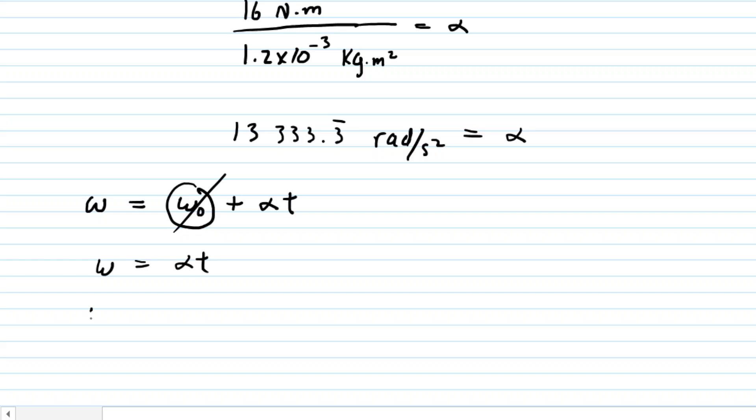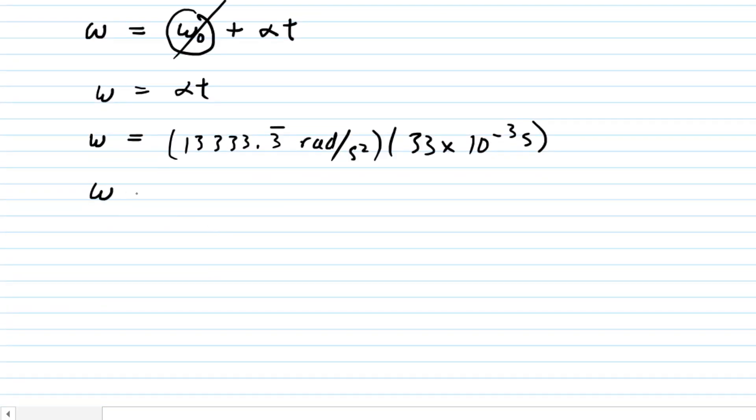Since the time was given, we can plug in the known values. When we calculate the final angular velocity, we get 440, and the units are radians per second. This is the answer to part B of the question.